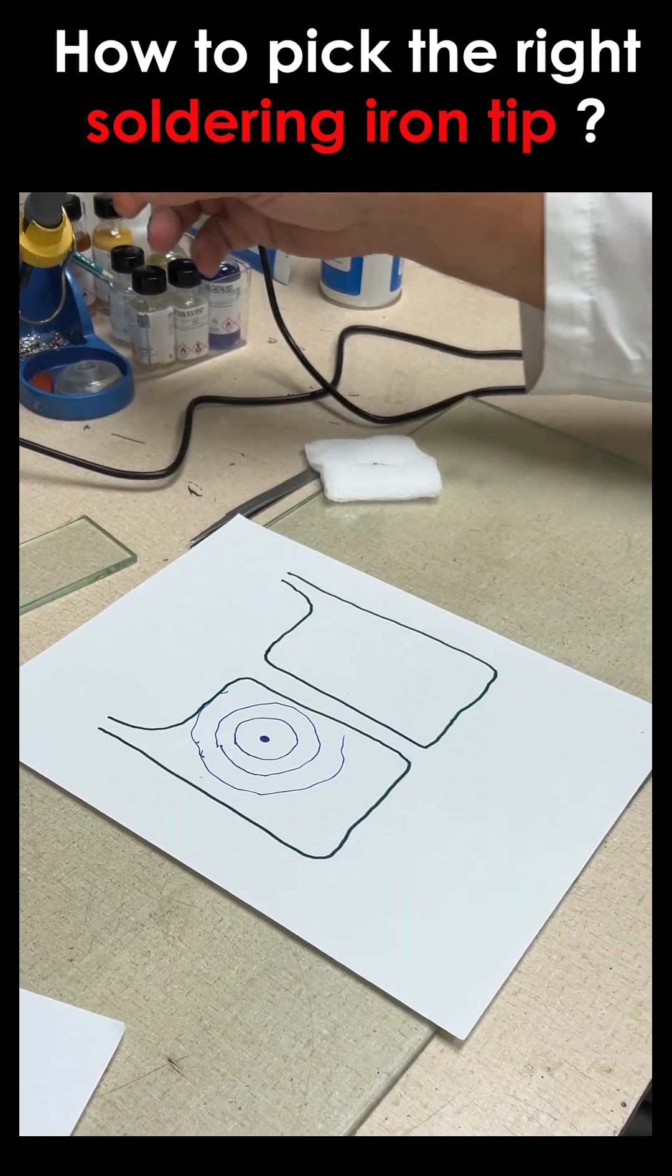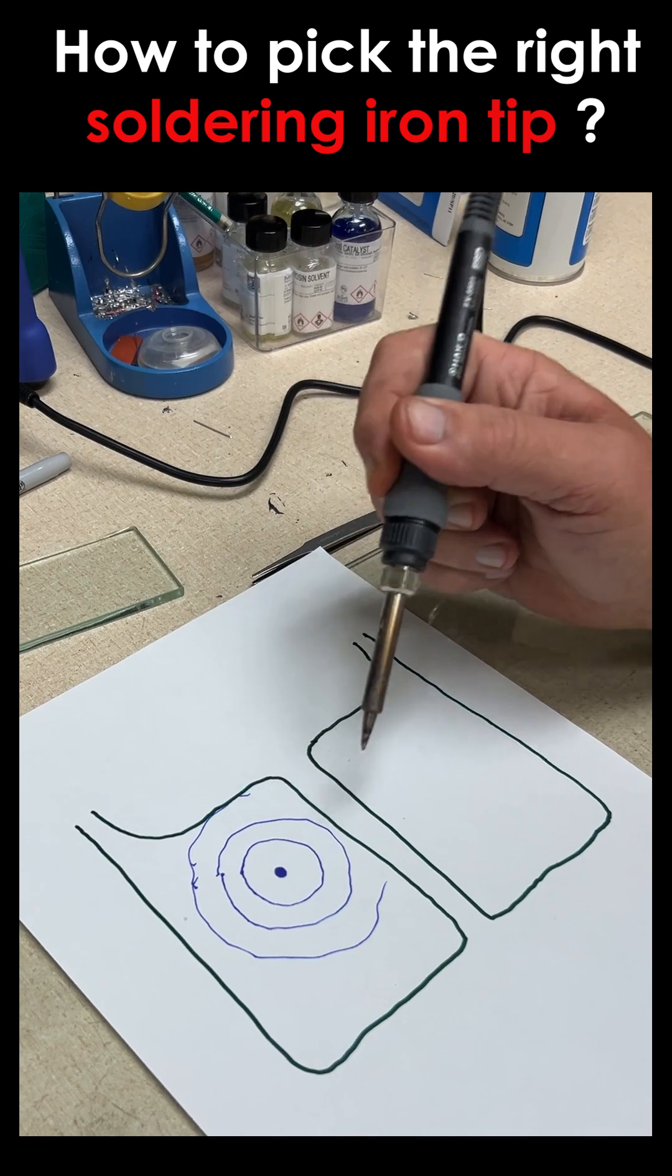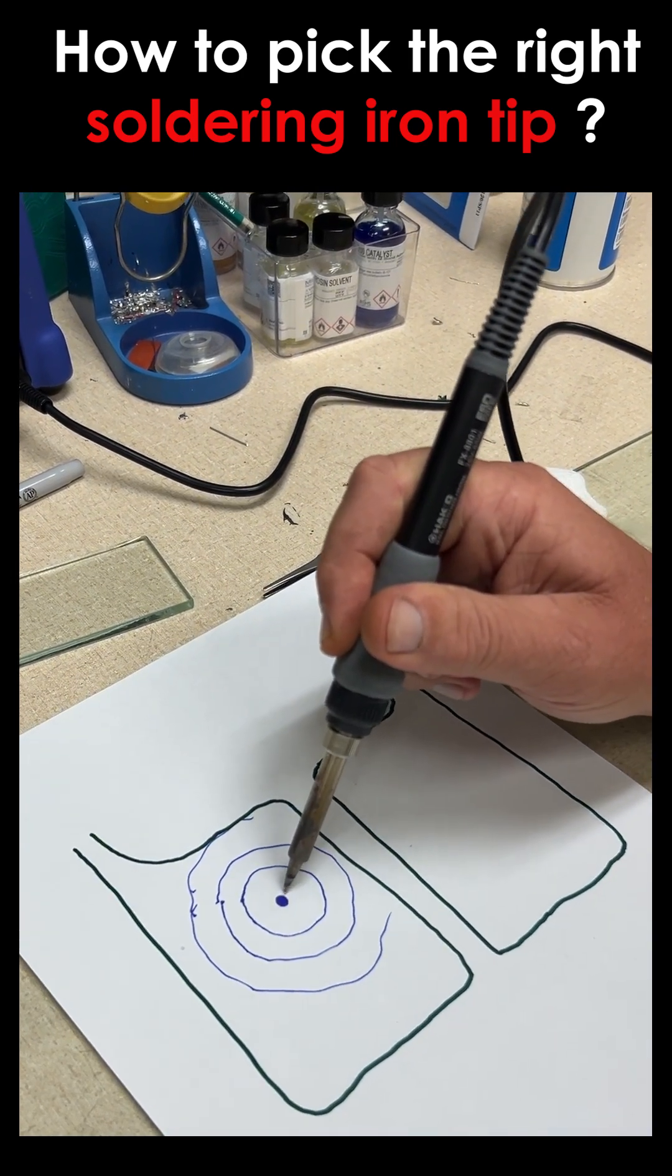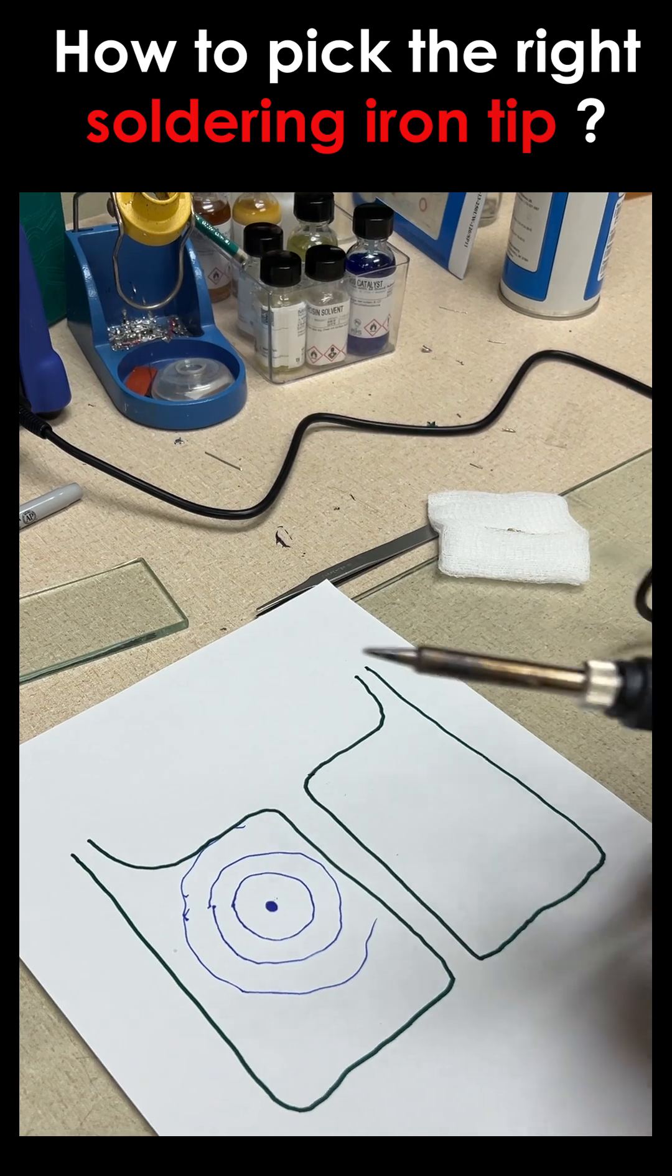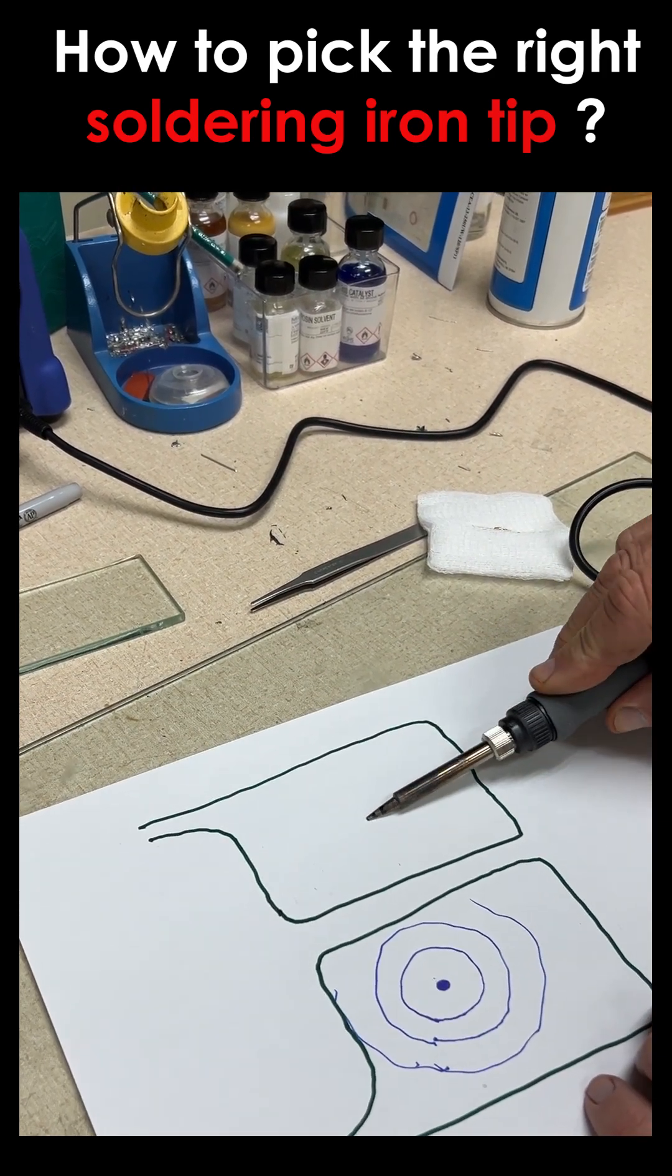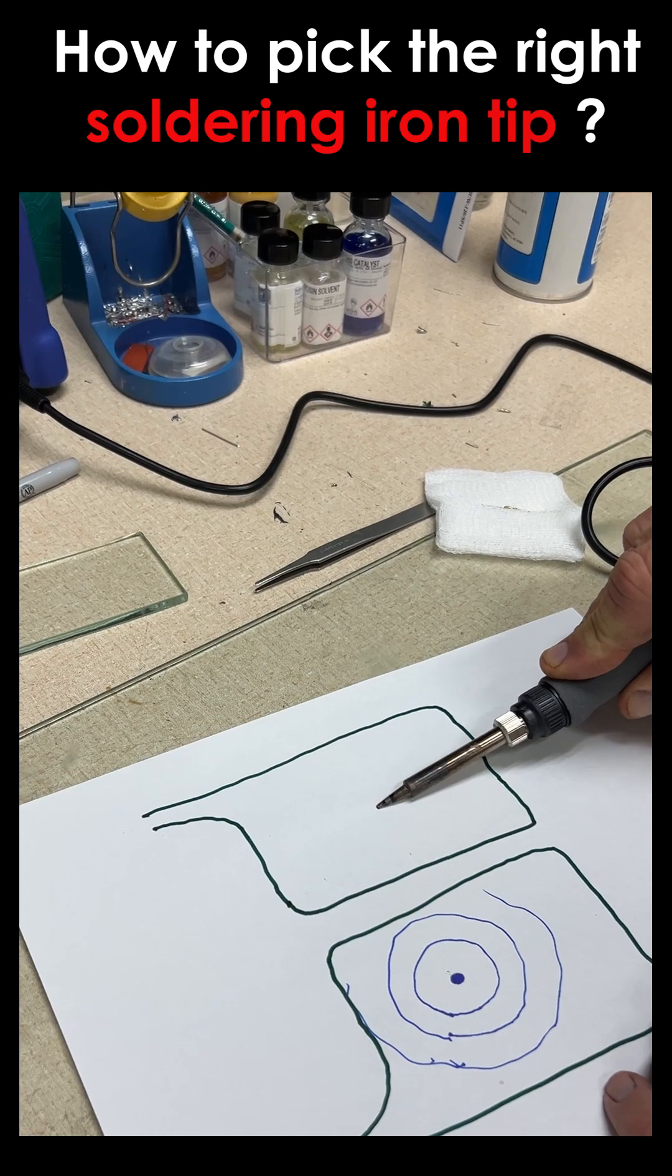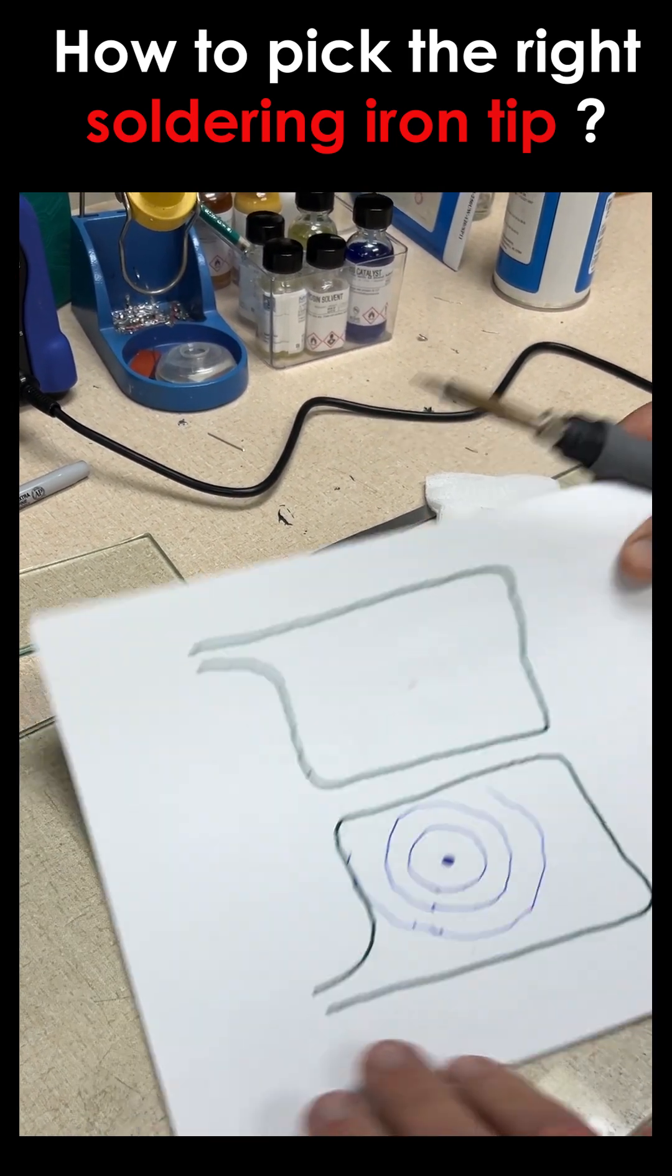So when you're holding the pencil, again, even with a flat tip, you don't want to hold it like this. The idea is to transfer heat. So what you want to do with this flat surface is look at the flat, hold it almost at an angle like this. So that flat surface has maximum contact with the strain gauge.